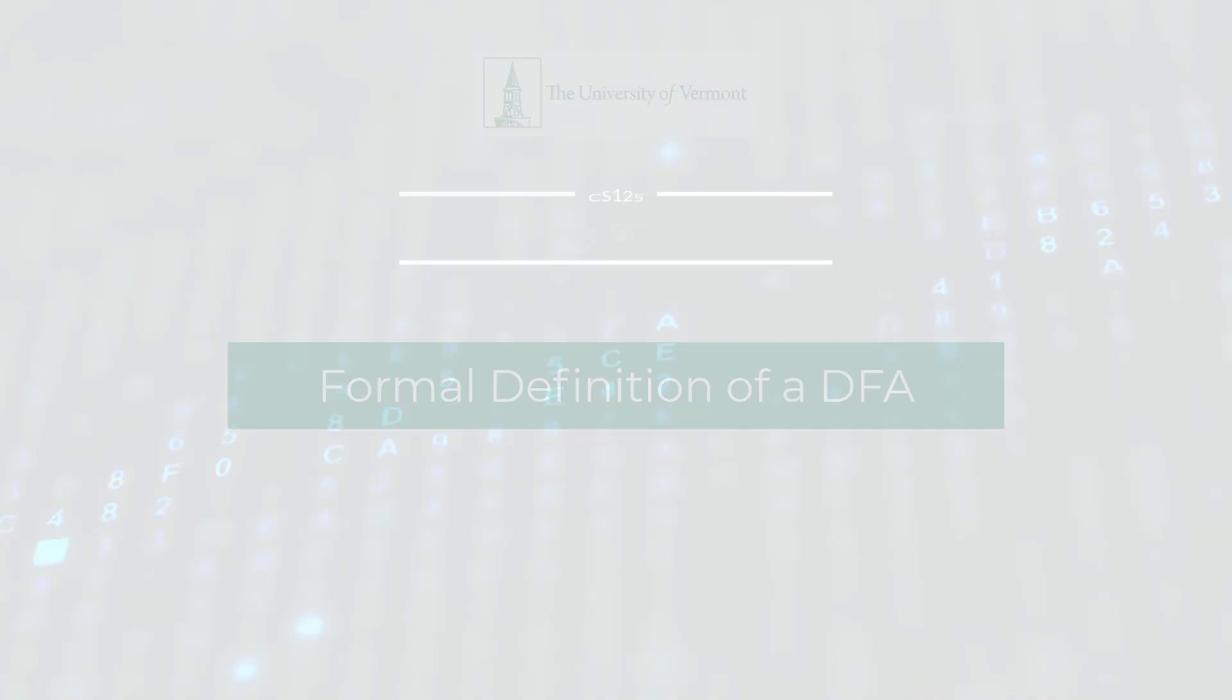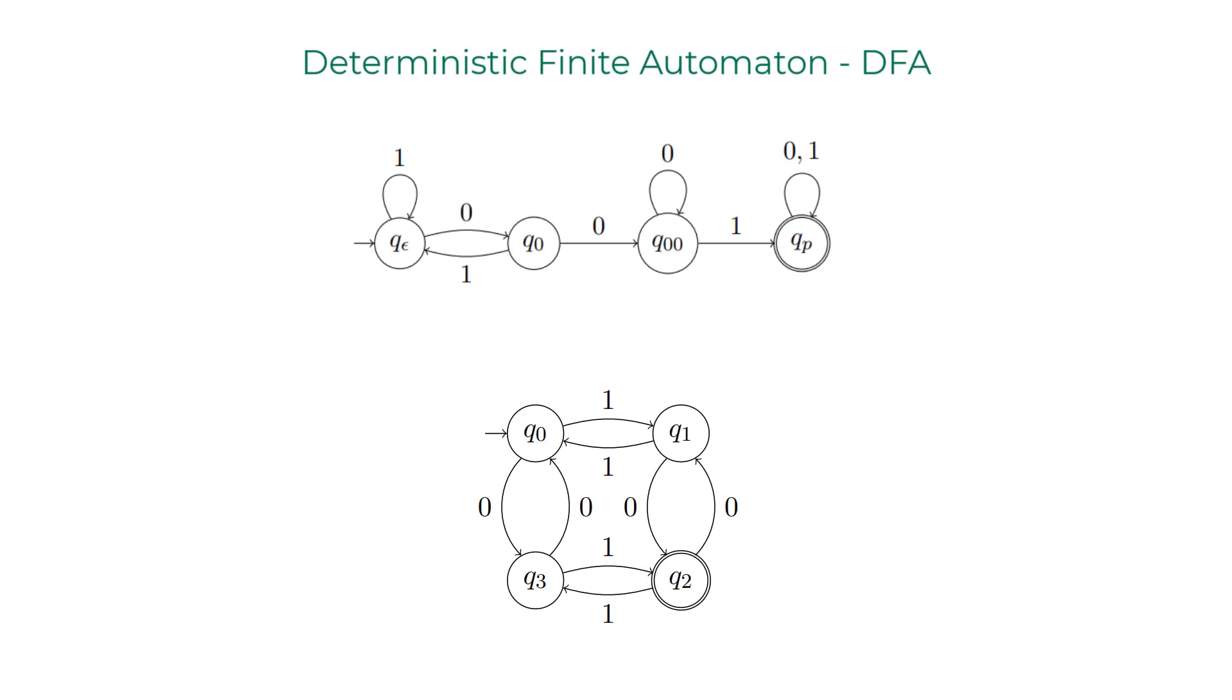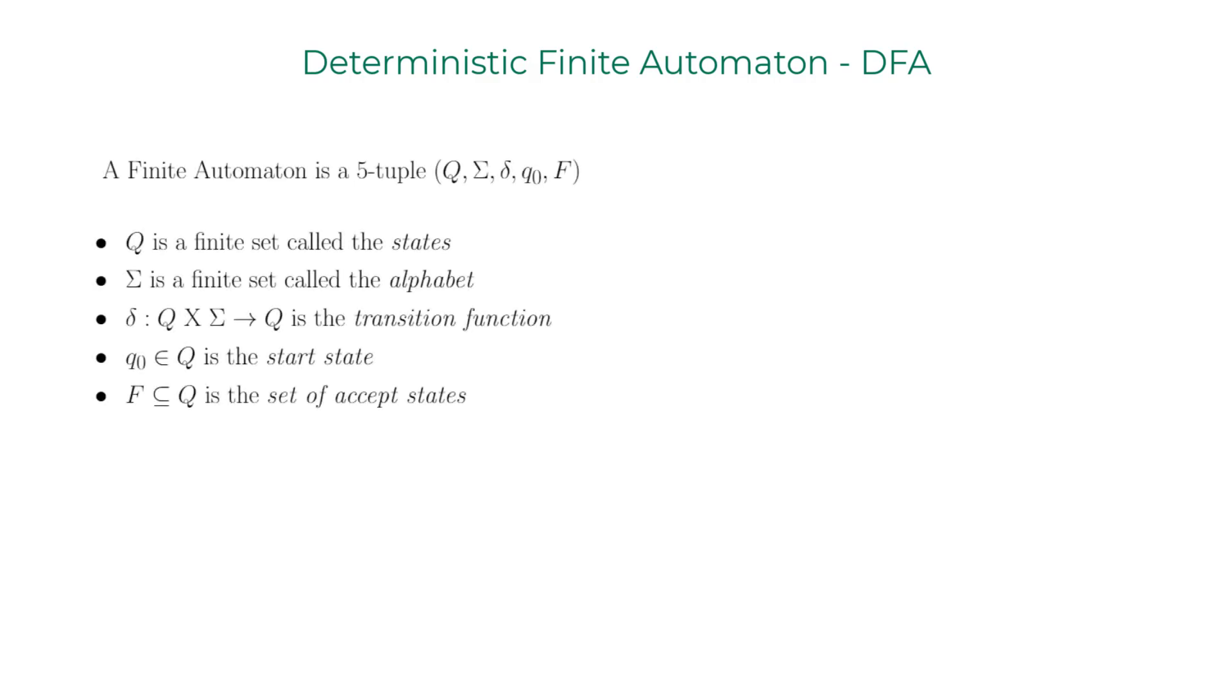I hope you have developed some intuition on how to interpret a given deterministic finite automaton. In this lecture we will formally define what it means to be a deterministic finite automaton or a DFA. Any DFA you can come up with can be represented by this 5-tuple. We will be spending the next 10 minutes examining every term in this tuple in depth.